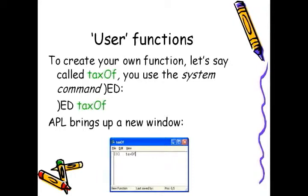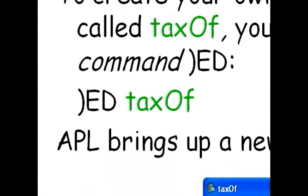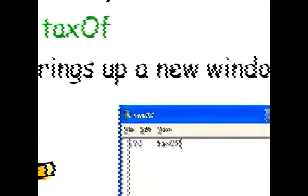Let's say we'll call it taxOf. To create a function we can use the system command right paren ed, ed for editor. And we say that we want to create a function taxOf, T-A-X capital O-F. And APL brings up a new window. It already has typed a name for us.